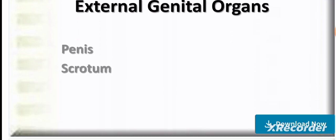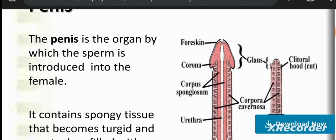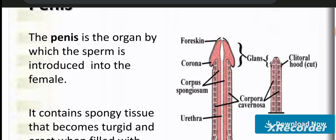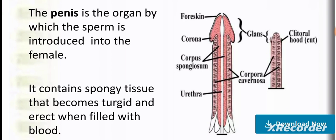Looking at the external genital organs, we see the penis and scrotum. The penis is the organ by which sperm is introduced into the female. It contains spongy tissues that become turgid and erect when filled with blood. Different parts of the penis include the corona, foreskin, corpus spongiosum, urethra, corpora cavernosa, and glans penis.